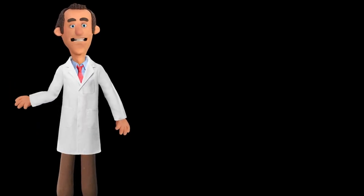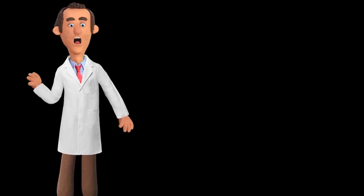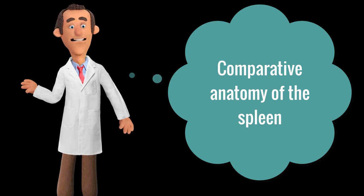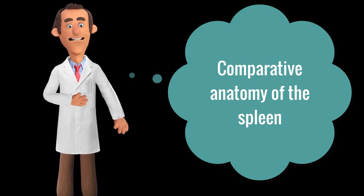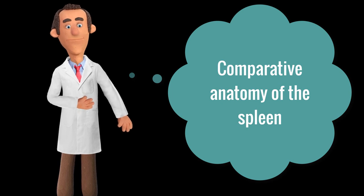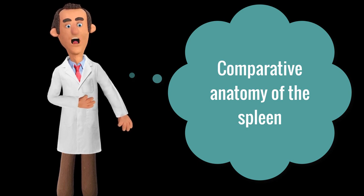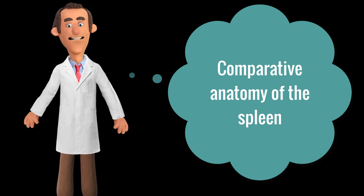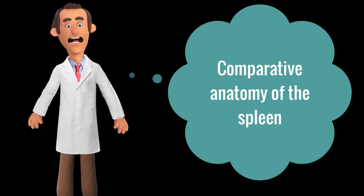Hello everyone, this is Ahmed and welcome back to another anatomy tutorial where we are going to be talking about the spleen, its anatomical features, and the topography of the spleen inside the abdominal cavity. As you know, the spleen is one of the intra-abdominal organs, located normally — depending on the animal species — on the left side, caudal to the diaphragm, inside the cranial part of the abdominal cavity. In this video we will also look at the comparative anatomy between some animal species.